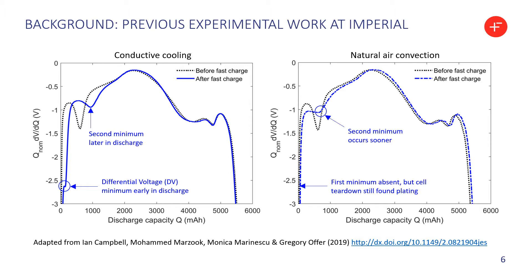With the conductive cooling case now on the left, two minima are observed: one very early on and a second significantly later, whereas in the control study before the fast charge only one minimum is observed. In the natural air convection case, there is only one minimum in both cases. Yet when the cell was taken apart afterwards, significant lithium plating was found in both cells. So what's going on? That's where the modelling comes in.